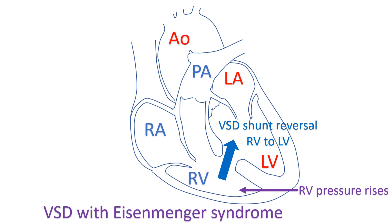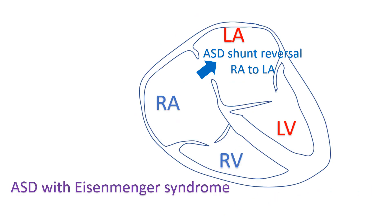In both VSD and PDA, the pulmonary pressure can rise up to the level of the systemic pressures but not beyond that, because of the unrestrictive communication. A similar reversal can also occur across the ASD so that blood flows from the right atrium to the left atrium.